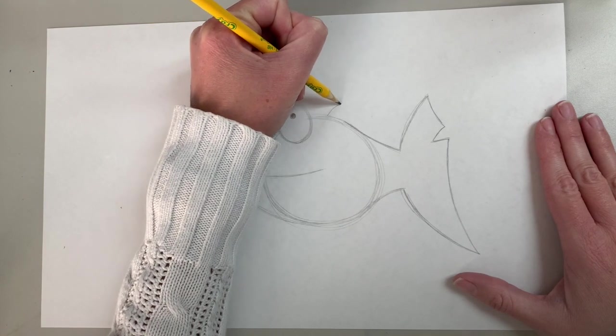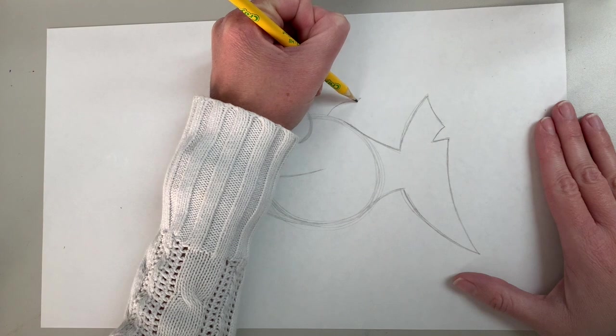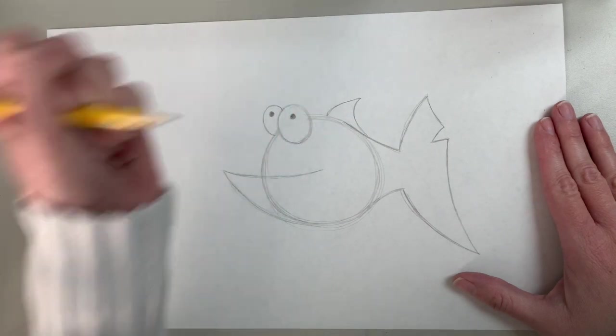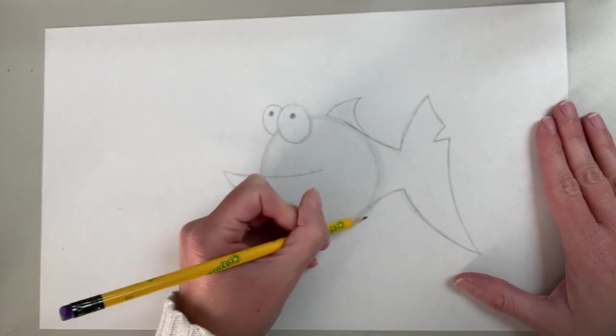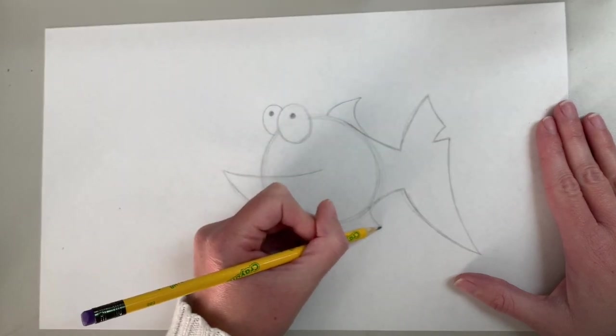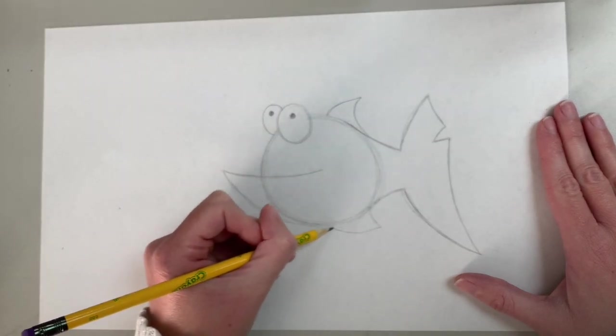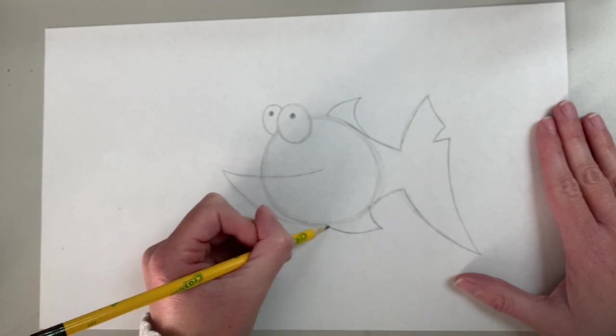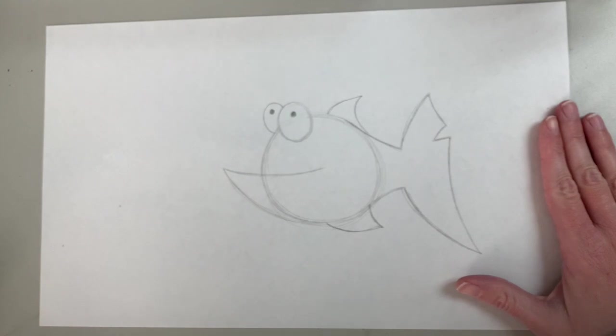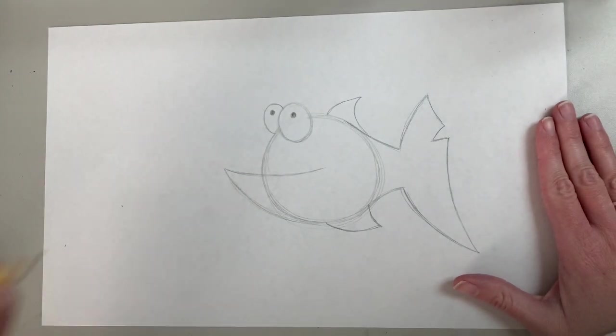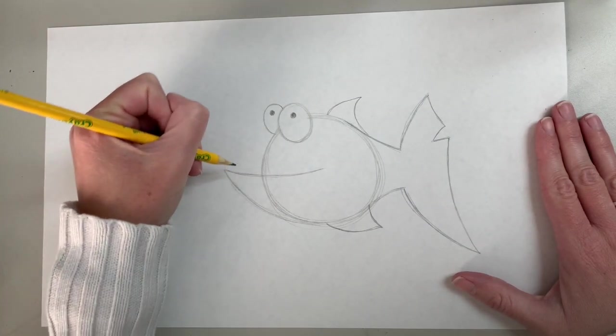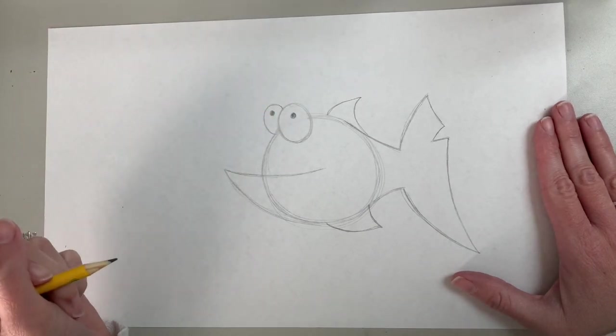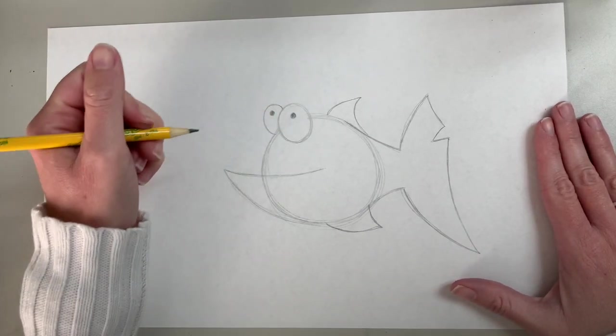And then down here we're going to have one that comes out and curves around and meets on the bottom of our circle. So we have our two fins. Now what we want to do is add in our teeth. So he's kind of a funny looking fish and he kind of has funny looking teeth and a funny bite.